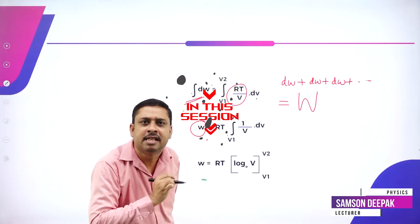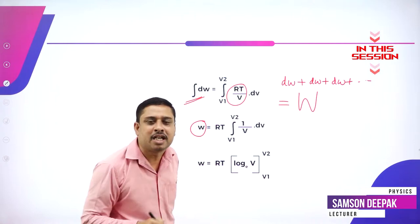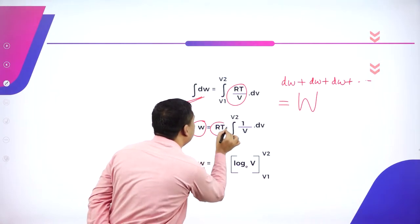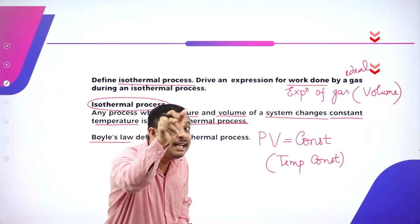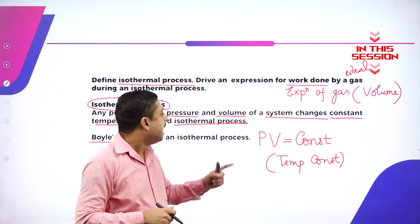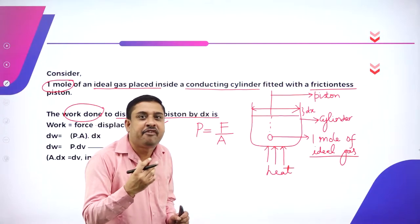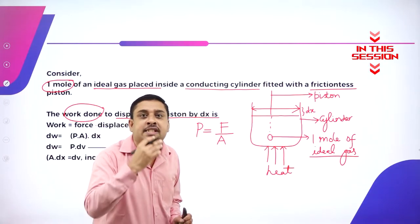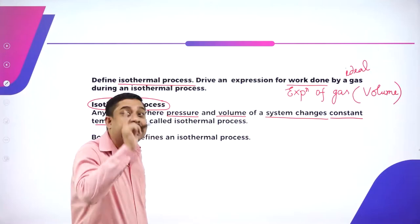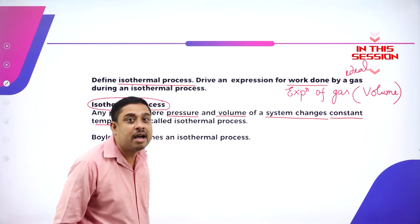It's an isothermal process. Temperature should be the same. Temperature will not change. Temperature is a constant. Temperature does not change. Temperature remains constant. Pressure is defined as force per unit area. But temperature is remaining constant.